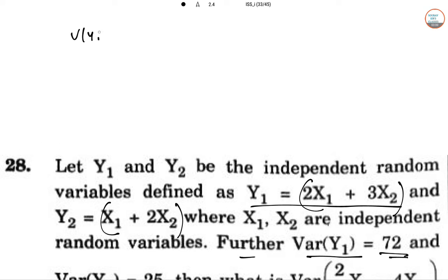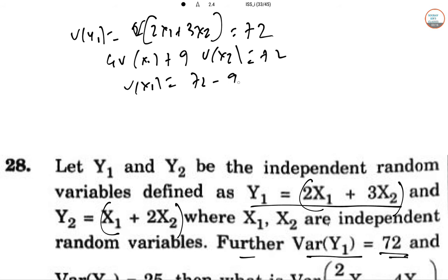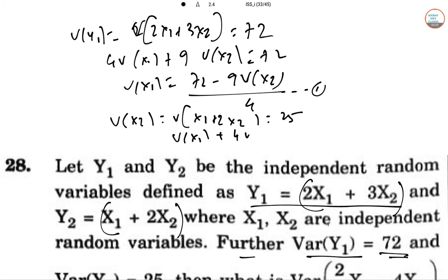V(Y_1) = Var(2X_1 + 3X_2) = 72, so 4V(X_1) + 9V(X_2) = 72. This is equation 1. Similarly, V(Y_2) = V(X_1 + 2X_2) = 25, so V(X_1) + 4V(X_2) = 25. From this, V(X_1) = 25 - 4V(X_2). This is equation 2.